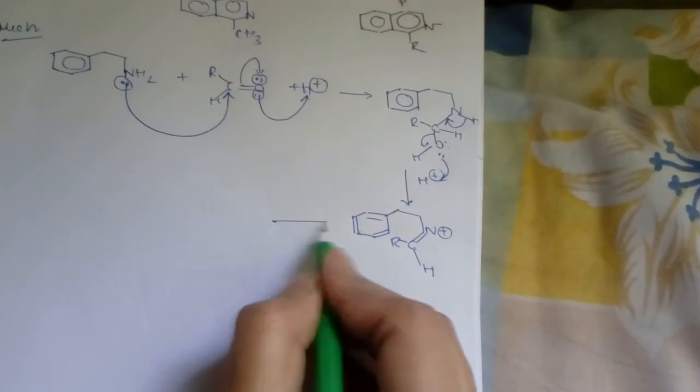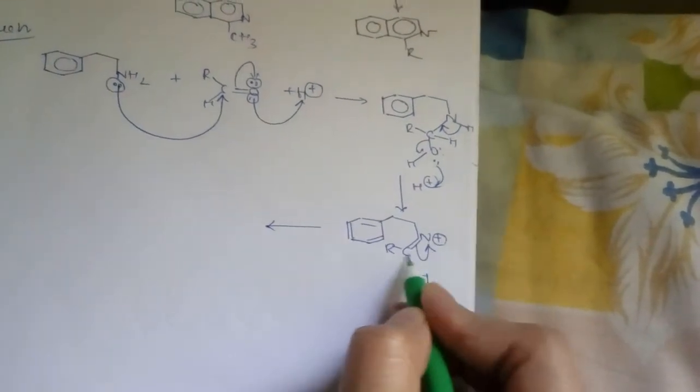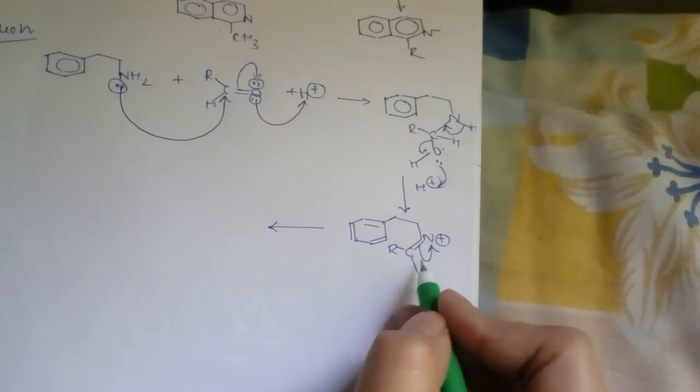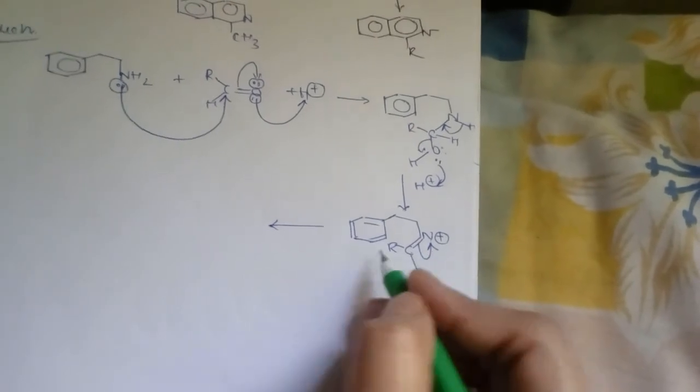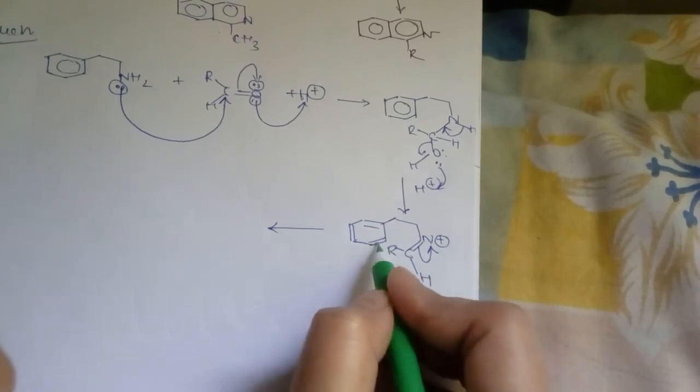This bond now - a positive charge is generated upon nitrogen and this can be neutralized by breaking of this bond. Now a positive charge generated upon carbon which can be neutralized by the electrons of aromatic benzene nucleus by a neighboring group participation reaction.